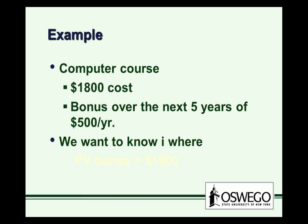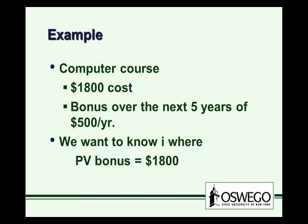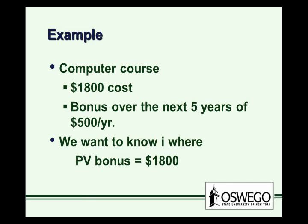In an IRR application, we'd like to know the interest rate — or in other words, the discount rate — where the present value of those bonuses will be equal to $1,800. Because the $1,800 cost is upfront at time zero, but you have to wait over five years to get $500 a year for the bonus. So we really need to think about present value if we're going to compare these cash flows.